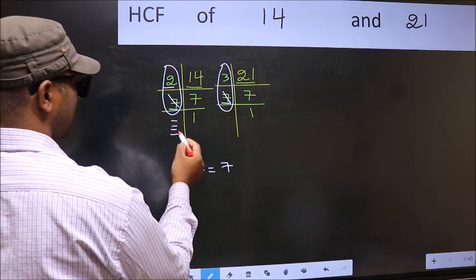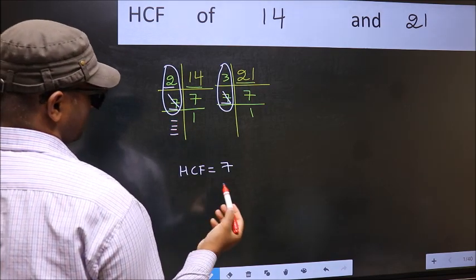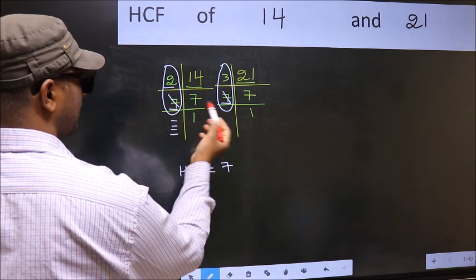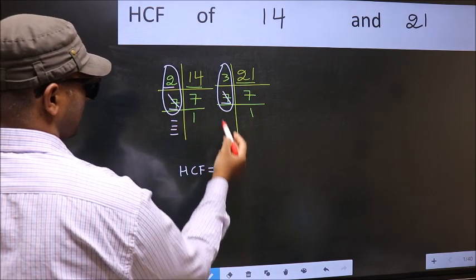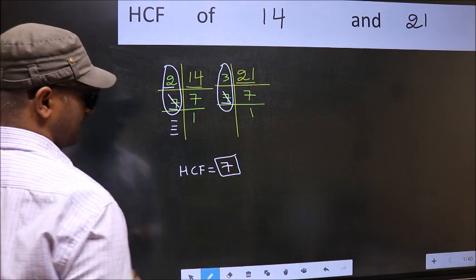No more numbers have been left out. So we got only one number 7 present in both the places. So 7 itself is our HCF.